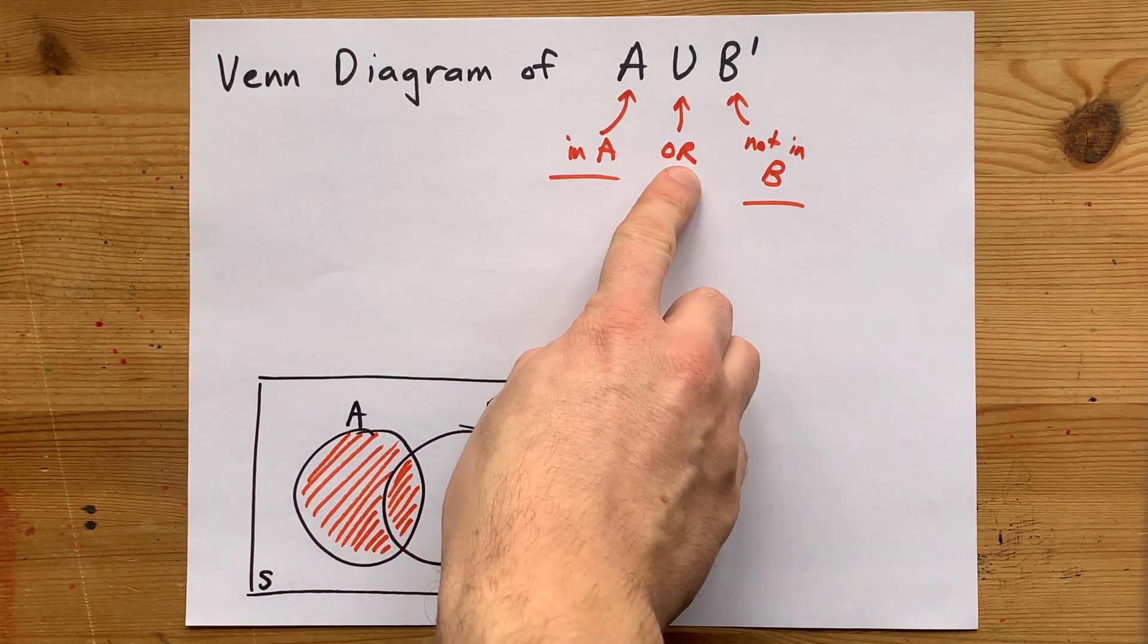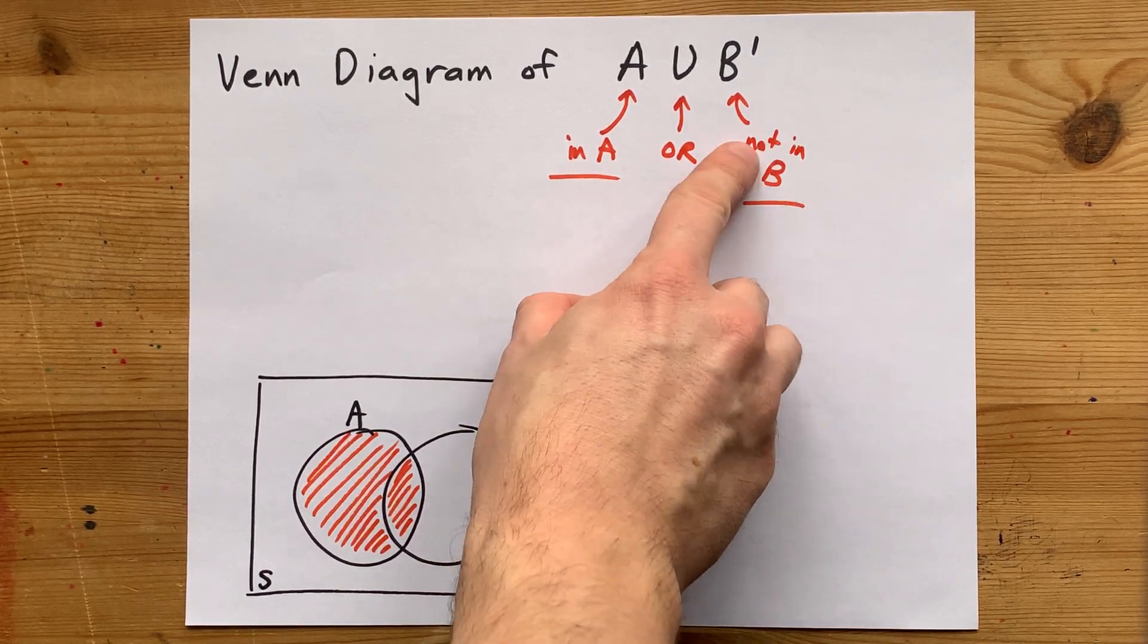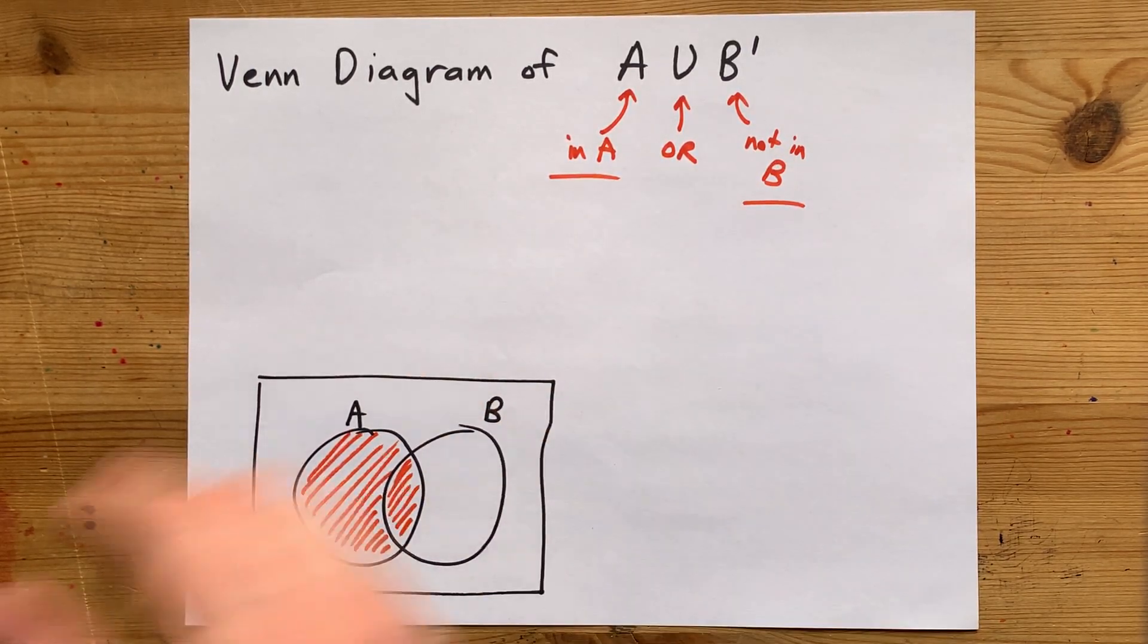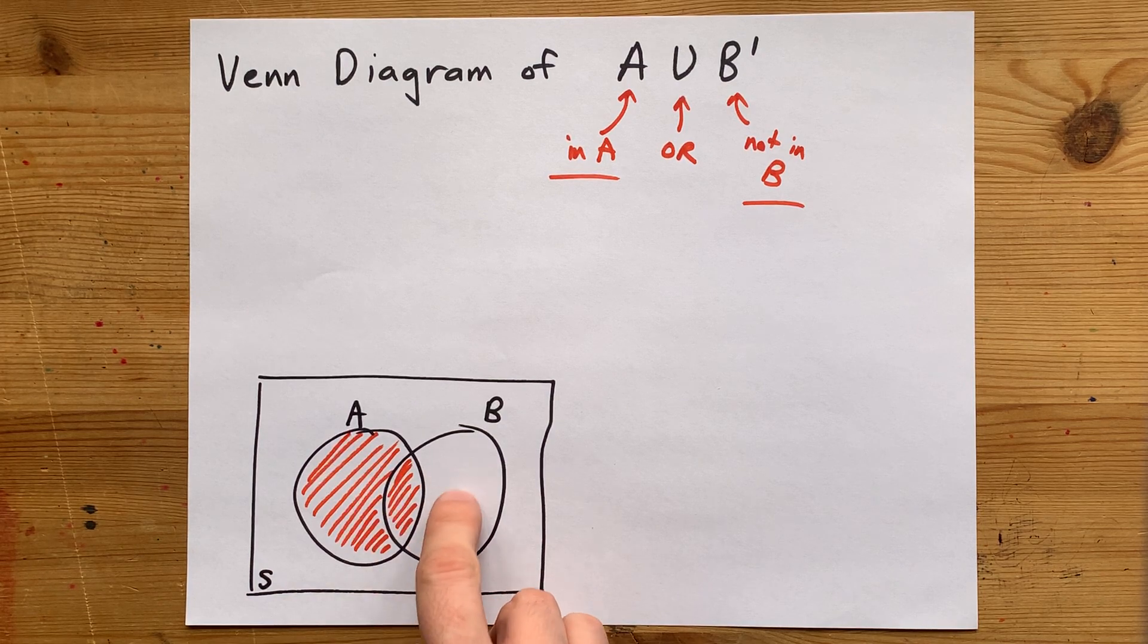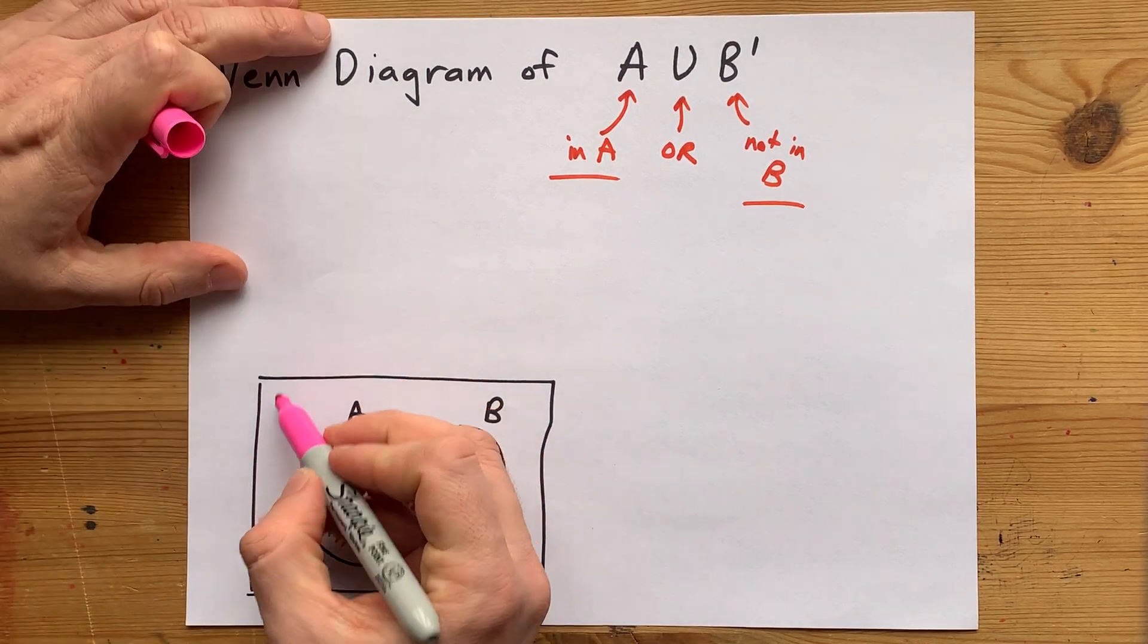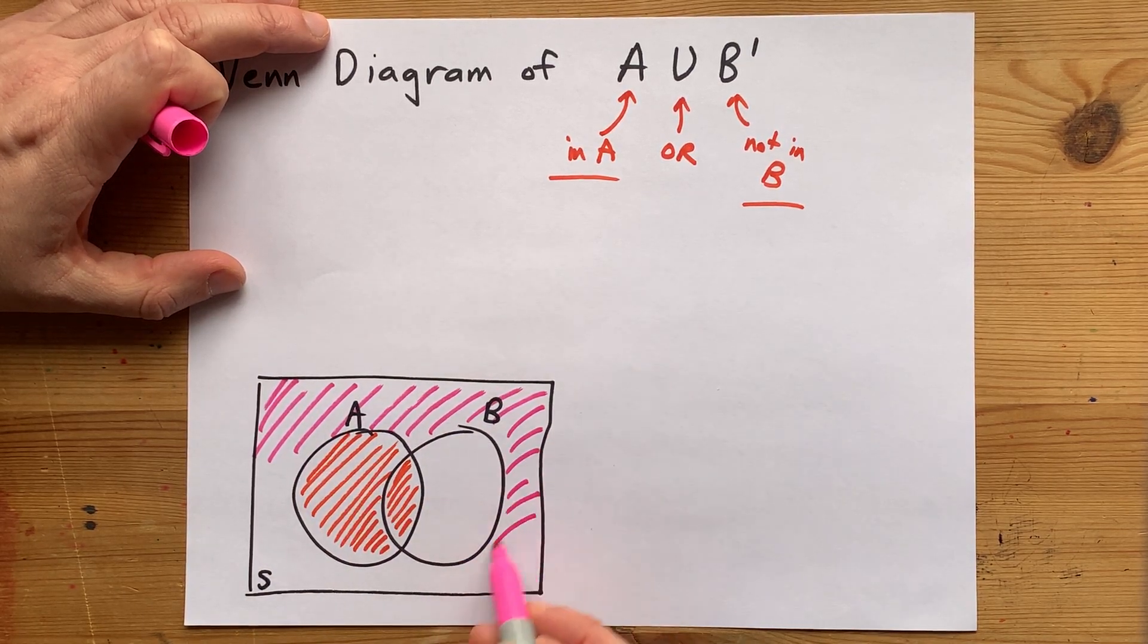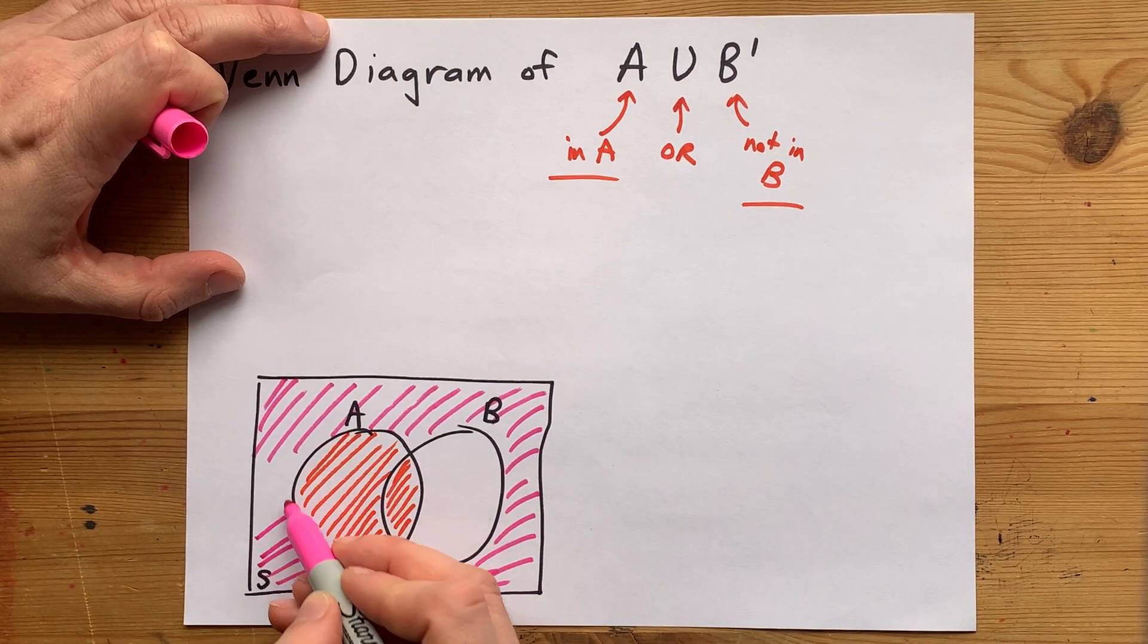Again, OR means that both of those count, and also anything that's not inside B will also count. Now, we can't shade this section here because it is clearly inside of B, but we do get to add on this. This is not inside of B, and therefore counts towards our union.